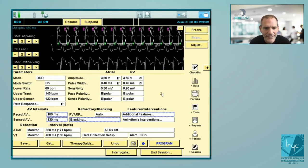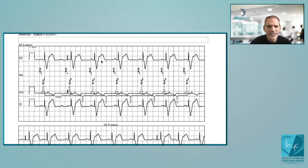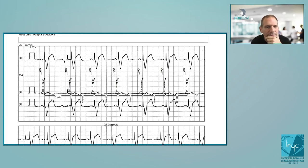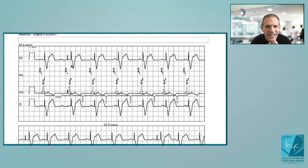Anyone have an idea on this tracing? This is a dual chamber pacemaker in a patient with AV block. What is the problem here? Initially you see normal operation — atrial sensing, ventricular pacing — but here there is atrial undersensing. You will have atrial pacing and ventricular pacing instead.